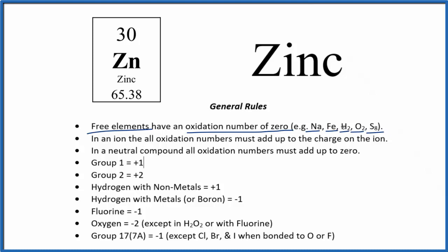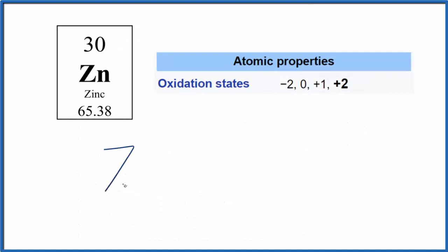Let's take a look at two of those. If we have something like zinc chloride, ZnCl2, this Cl here, chlorine's group 17, it'll be minus one. We have two of them. The oxidation state on the zinc will be plus two. So here zinc has an oxidation state of plus two.